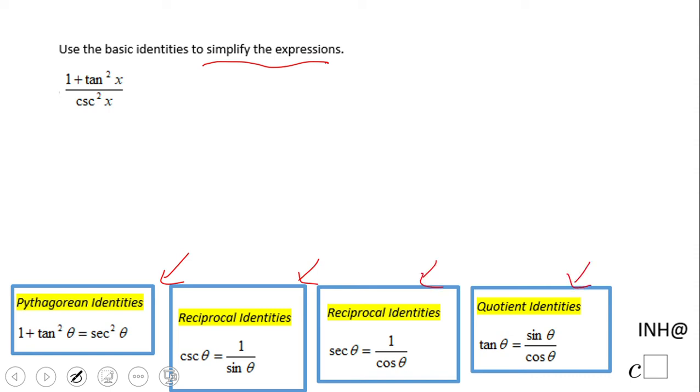The first thing I'm going to do is use the Pythagorean identity which says 1 plus tangent squared equals secant squared. Now always you stop and look: is this simple enough? Sometimes it is. In this case, it's not. Now I'm going to use these two reciprocal identities: secant equals one over cosine.